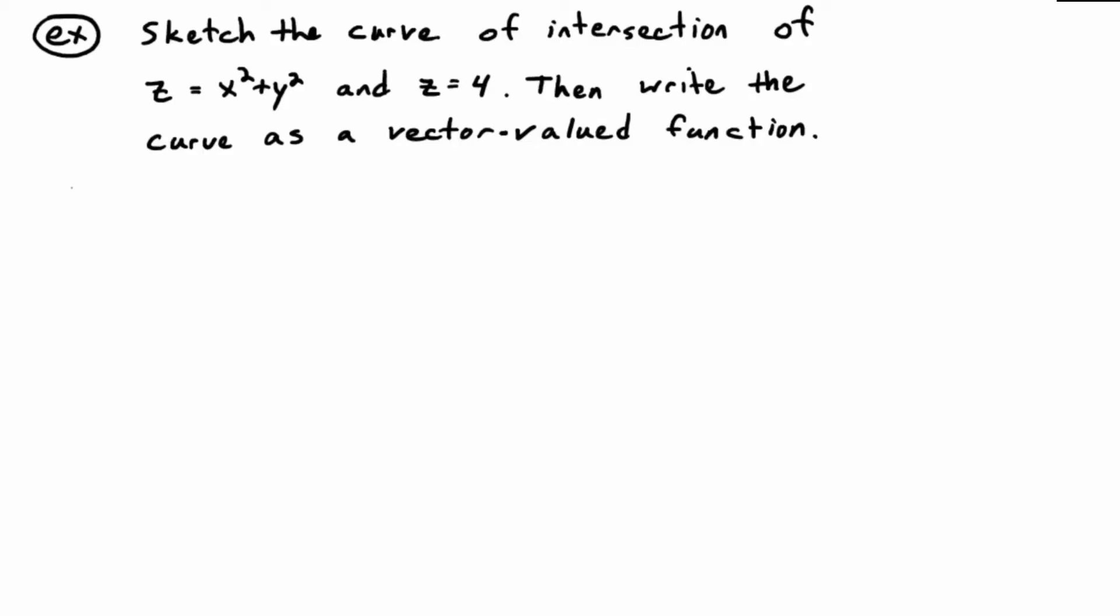Sketch the curve of intersection of z equals x squared plus y squared, something you should be very familiar with now after studying what that surface would look like, and z equals 4. Then write the curve as a vector-valued function.